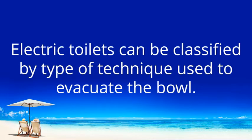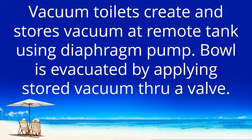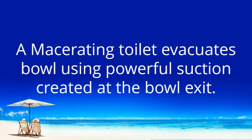Electric toilets can be classified by the type of technique used to evacuate the bowl. Vacuum toilets create and store vacuum at a remote tank using a diaphragm pump. The bowl is evacuated by applying stored vacuum through a valve. A macerating toilet evacuates the bowl using powerful suction created at the bowl exit.